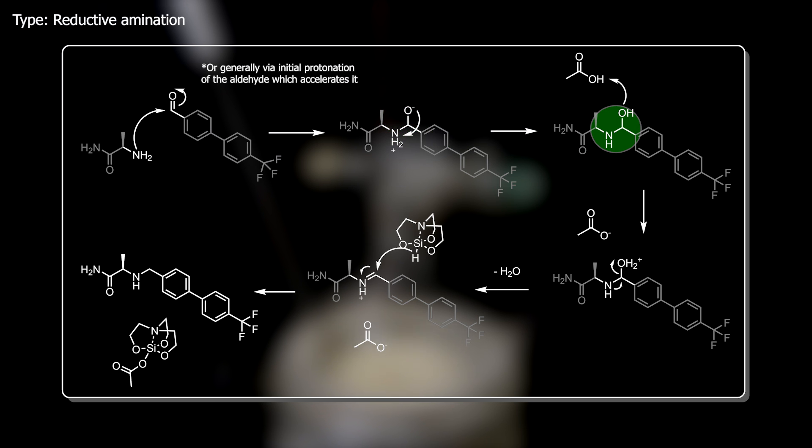The hydroxyl is protonated by the acetic acid and is then kicked off as water, and the free electron pair from the amine moves to form a double bond to make up for it, giving this iminium. Hydrosilatrane is able to reduce the iminium. So the hydride of hydrosilatrane attacks the iminium carbon, and the double bond electrons move onto the nitrogen, giving the final amine and probably this acetylsilatrane.